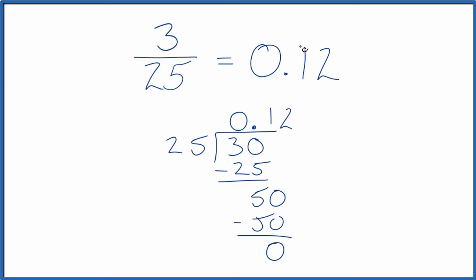And that's what we found before. So the fraction 3 over 25 equals the decimal 0.12. This is Dr. B. Thanks for watching.